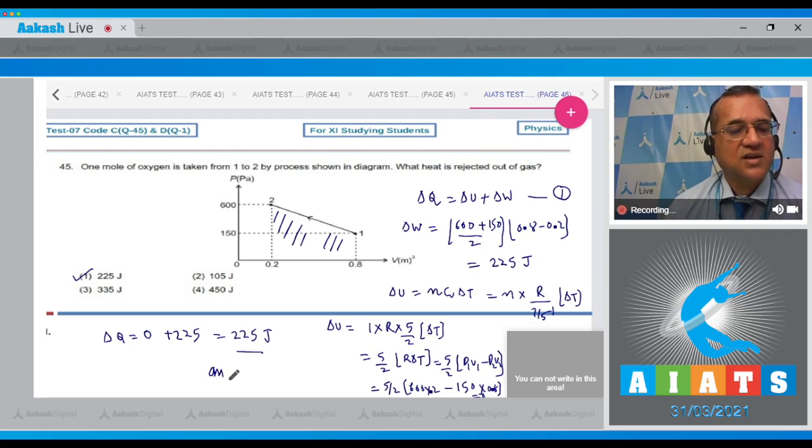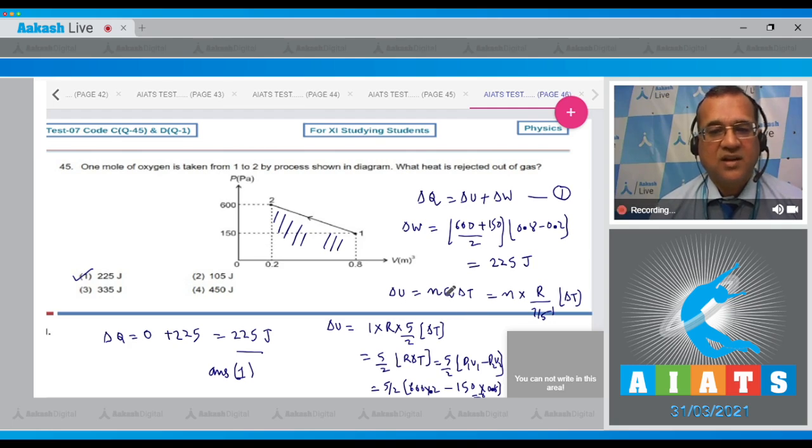Let's look at the options. The first option is 225 joules, which is the correct answer. So answer to this one is 1. With this we finish the whole exercise. Hoping you will get some good results in the future also. Keep working, thank you very much.